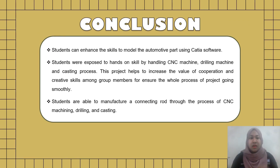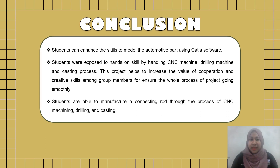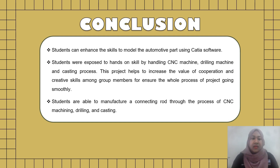As a conclusion, from this project students can enhance their skills to model automotive parts using CATIA software. Students were also exposed to hands-on skills by handling CNC machines, drilling machines, and the casting process. This project helps to increase the value of cooperation and creative skills among group members to ensure the whole process runs smoothly. Students are able to manufacture a connecting rod through the processes of CNC machining, drilling, and casting. In summary, all the objectives were achieved successfully.